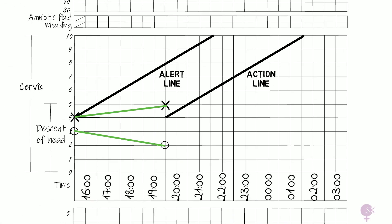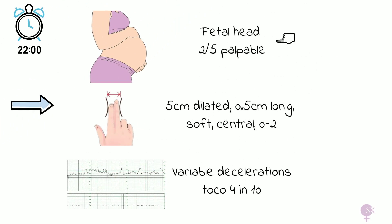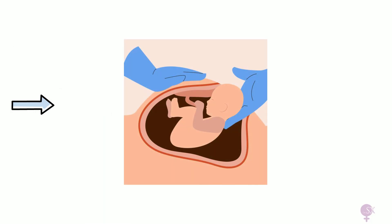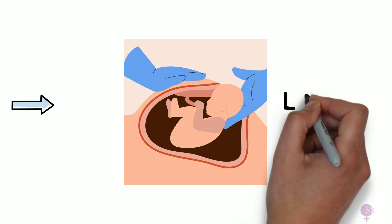Back to our partogram, we indicate the findings. As we can see, we have now also crossed the action line. The fact that examination findings are unchanged, we've crossed the action line, and there are signs of fetal distress means we really need to take action. A plan was made to proceed with caesarean section, and a healthy baby girl was delivered at 11pm.